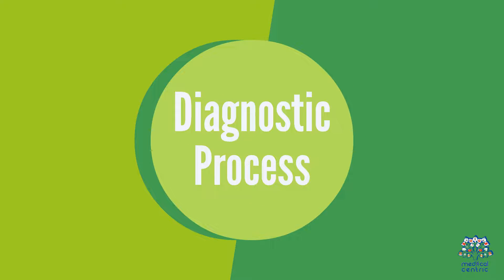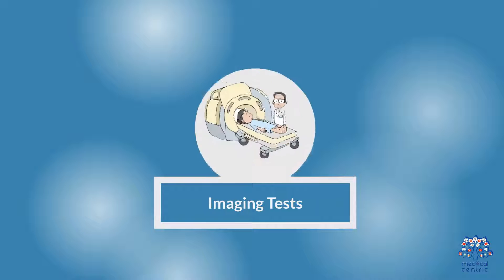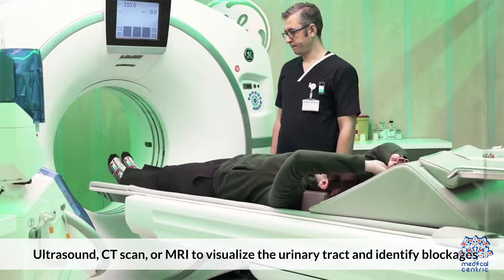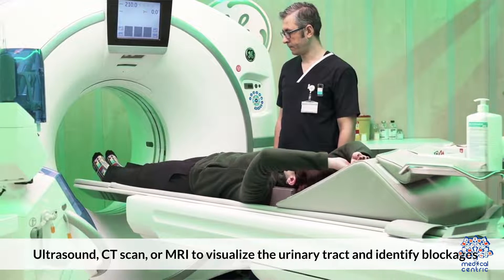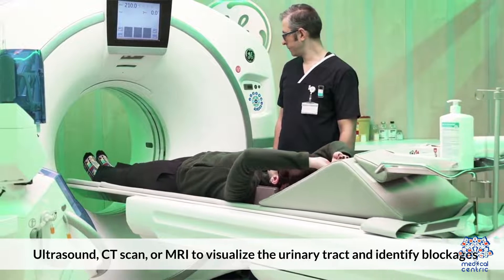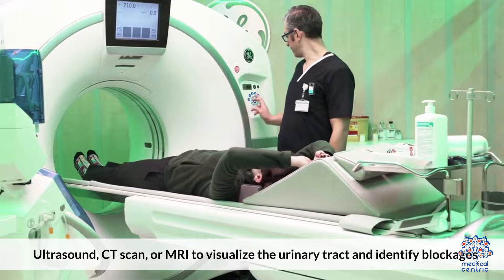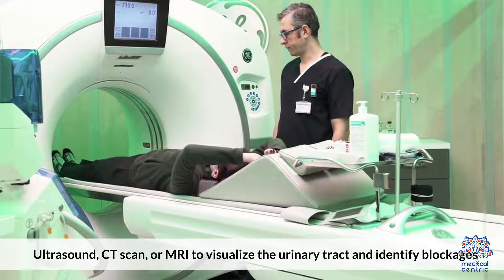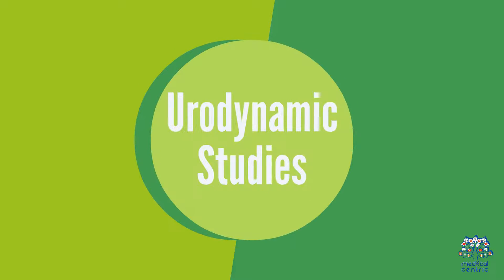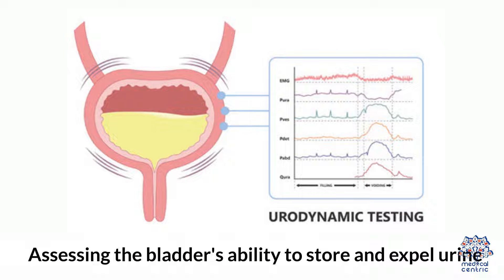Diagnostic Process: Imaging tests such as ultrasound, CT scan, or MRI are used to visualize the urinary tract and identify blockages. Urodynamic studies assess the bladder's ability to store and expel urine.